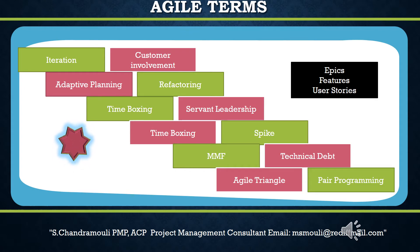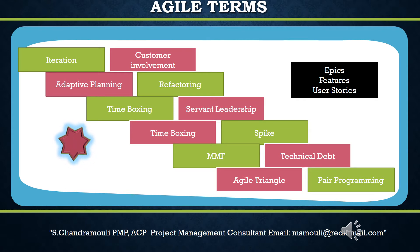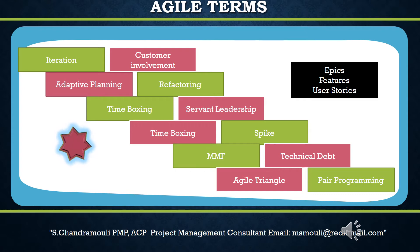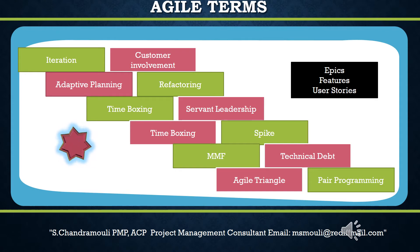Fourth, minimal marketable feature (MMF): MMF is the minimum feature set of the product so that people can start using it rather than waiting for all the features. There will be a release after minimal marketable features are created. It enables incremental delivery of the product. Multiple MMFs make the whole product, and each MMF has value to the end user on its own.